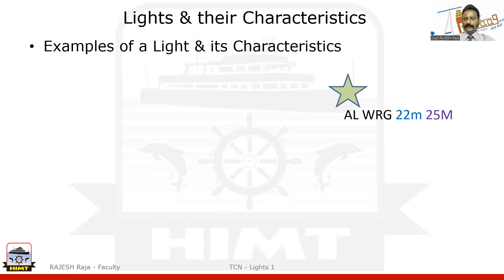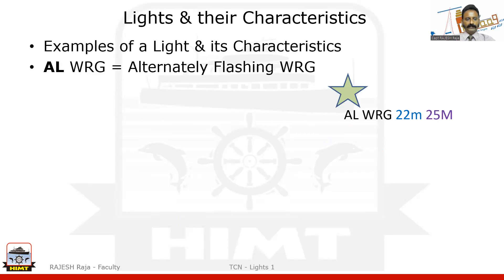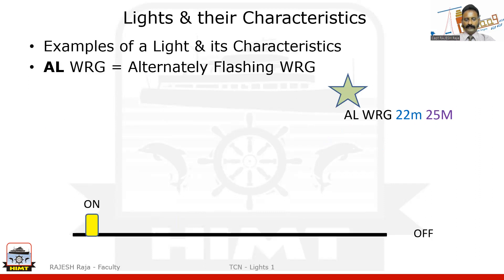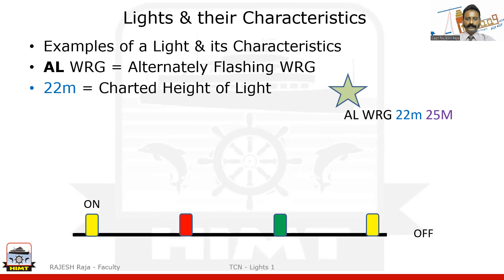Alternating white, red, and green — 22 meters charted height, 25 nautical miles nominal range. The light alternately flashes white, red, and green at the same place: white first, then after some time red, then green, and then white flashing starts again.